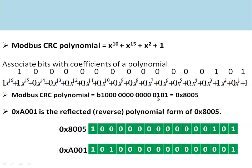The Modbus CRC polynomial value is 0x8005. For calculation of this CRC in Modbus, we use the reflected polynomial of 0x8005. The reflection of 0x8005 is 0xA001, and this is the polynomial which we use in Modbus RTU for calculating the 16-bit CRC.